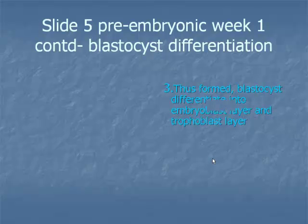The blastocyst consists of two layers of cells: an inner layer termed the embryoblast, that is, the inner cell mass, that becomes the embryo, and an outer layer termed the trophoblast that forms the embryonic part of the placenta.